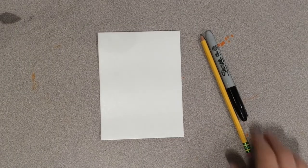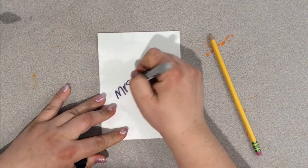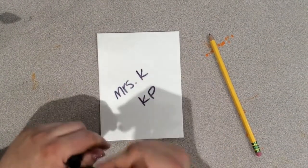To make your stamp, you're going to need a piece of printing foam, a sharpie, and a pencil. Begin by writing your name and class on the back of your foam.